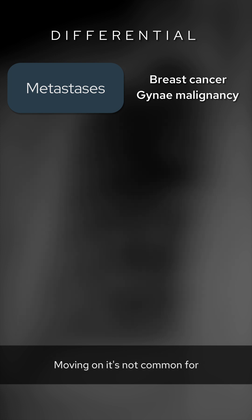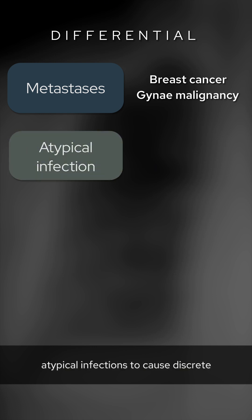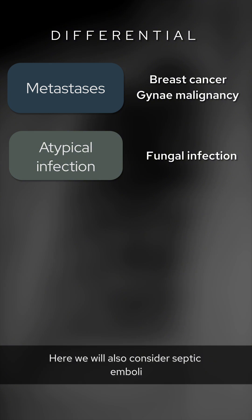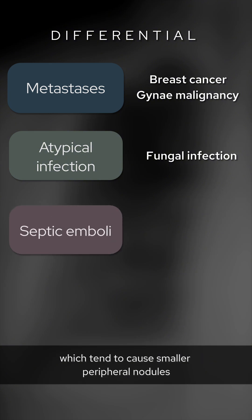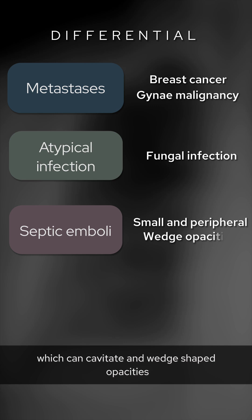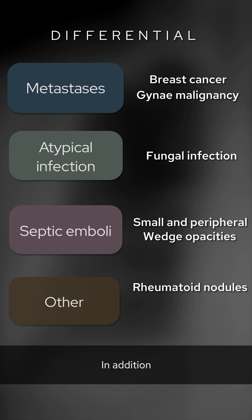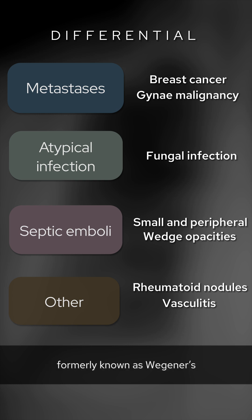Moving on, it's not common for atypical infections to cause discrete larger nodules, but sometimes fungal infection can. We'll also consider septic emboli, which tend to cause smaller peripheral nodules that can cavitate and produce wedge-shaped opacities. Rheumatoid nodules again tend to cause small peripheral nodules and so this is not typical.